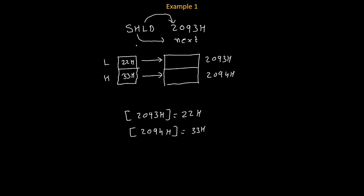Now let's talk about the group of this instruction. Since we are transferring the content of registers to memory, this instruction belongs to the data transfer group. Finally, regarding flags: since we are not modifying the accumulator, the flags will not be affected. Data transfer instructions generally do not affect any flags, and since SHLD belongs to the data transfer group, it will not affect any flag.